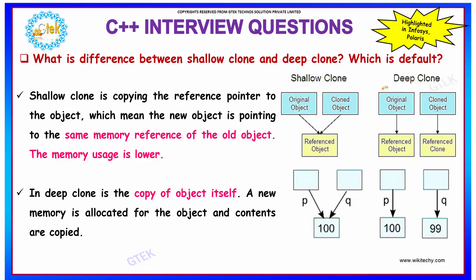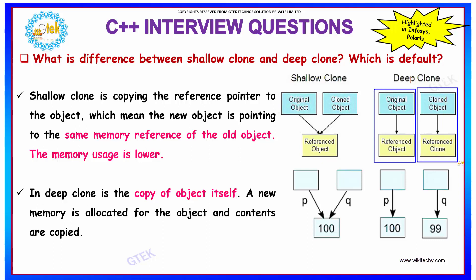In a deep clone, the object will produce a copy of itself. A new memory is allocated for the object and the contents. Hence, there will be a larger memory usage. Your deep clone has the same set of the copy of the object itself with a separate memory allocation.